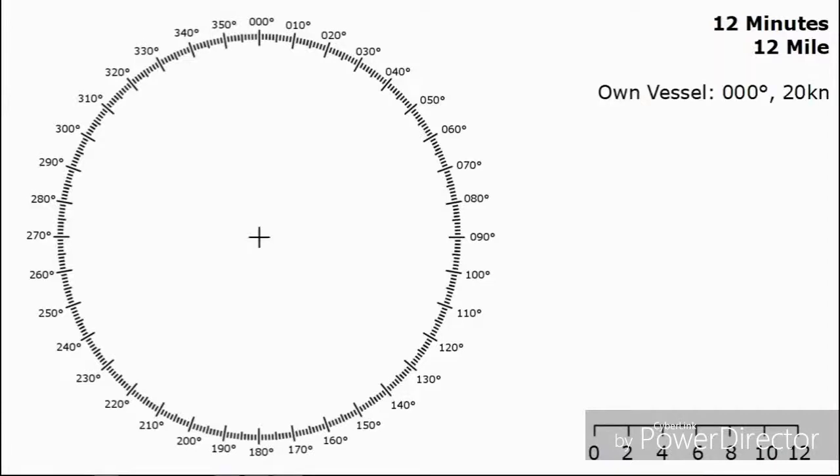Our own vessel we're going to be going due north at 20 knots. I've chosen 000 just because it makes the numbers that little bit easier. 20 knots of course means 20 nautical miles in one hour, so how many miles in 12 minutes? Because that's the time of our plot, we can divide down by 5 to find we cover 4 miles in 12 minutes.